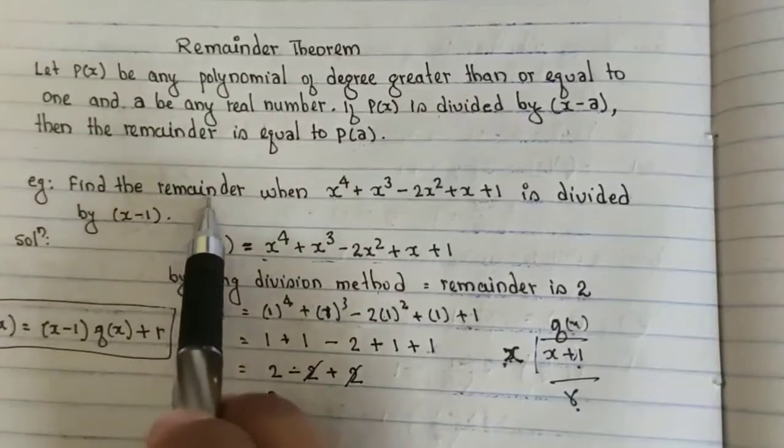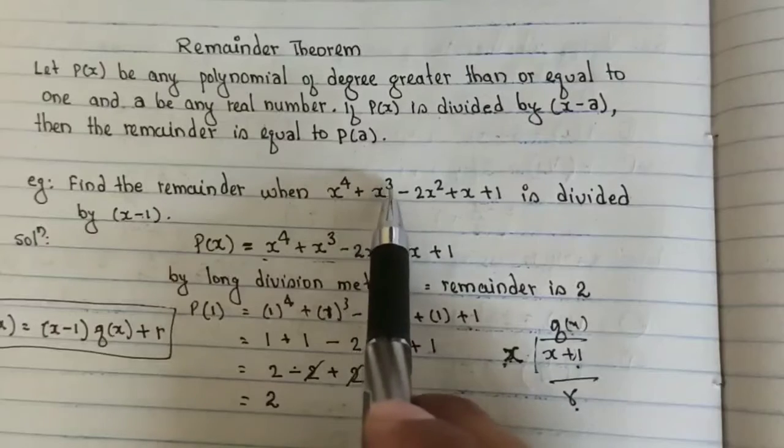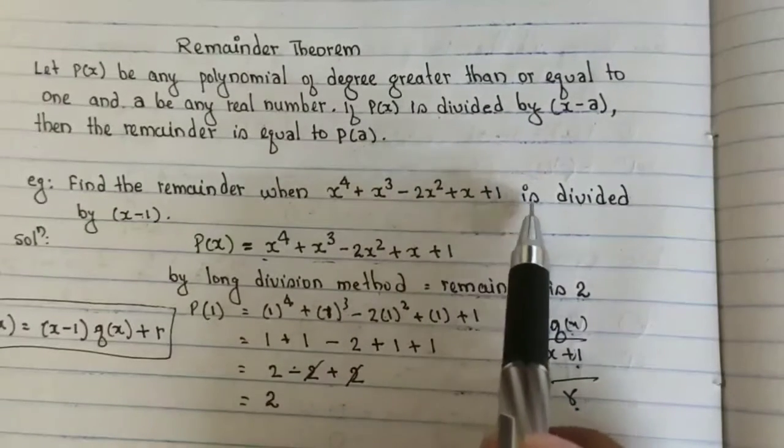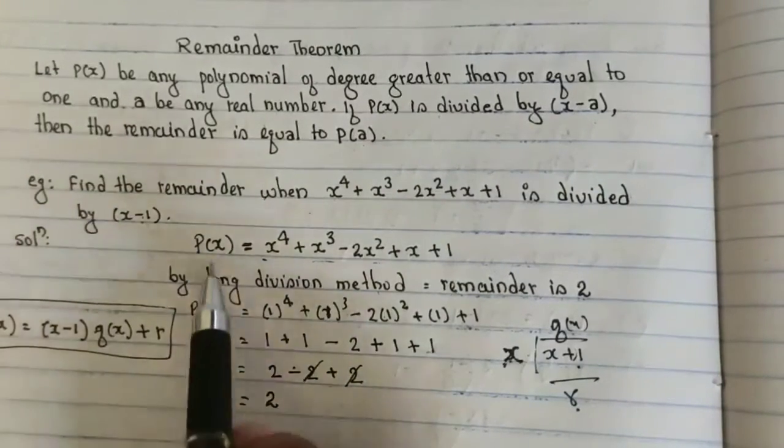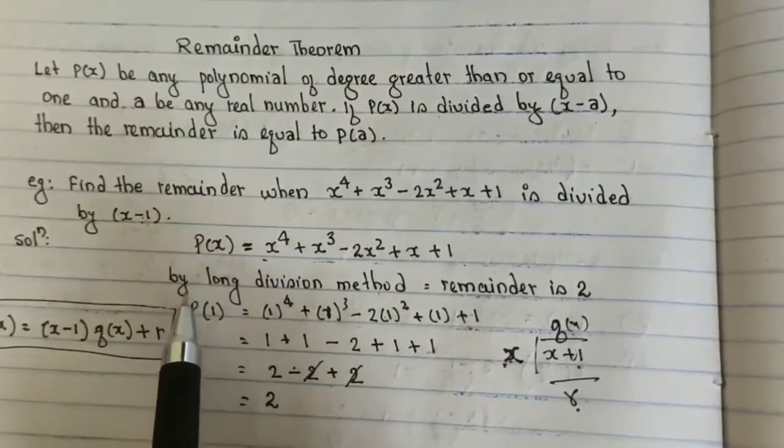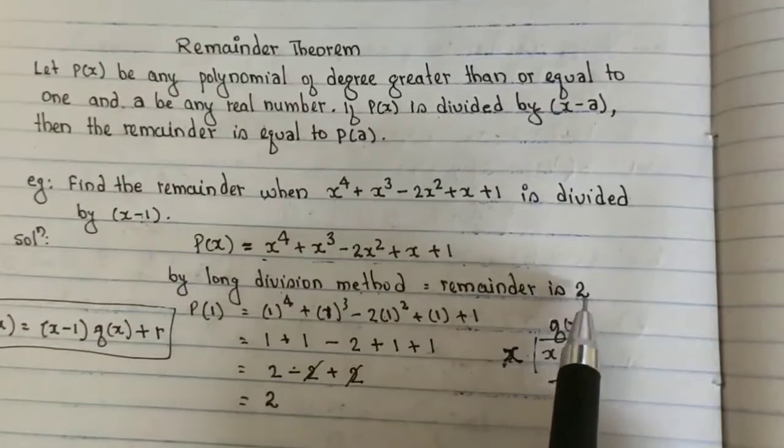Suppose here find the remainder when x^4 + x^3 - 2x^2 + x + 1 is divided by (x - 1). So here P(x) is this. If you go with long division method, your remainder will be 2.